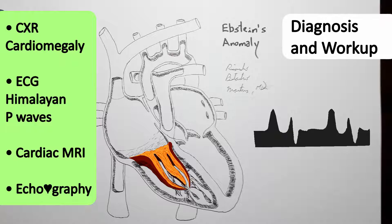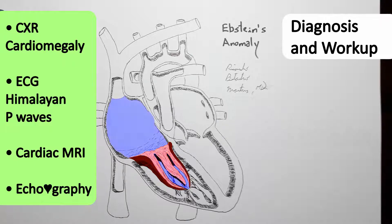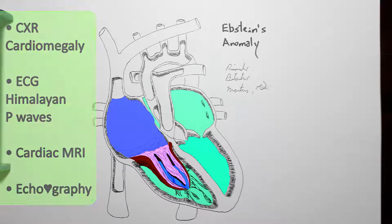...and the massively dilated right atrium, it's also useful because one of the prognostic factors for Ebstein anomaly is the ratio between the size of the right atrium and the size of the rest of the heart.